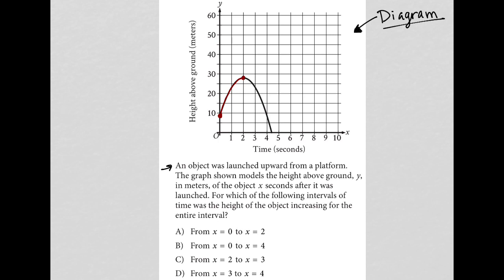So in terms of time that's from time 0 to 2, right? So from x equals 0 to x equals 2. So the answer that matches with that is choice A. From x equals 0 to x equals 2 we have a height that is increasing for the entire interval.